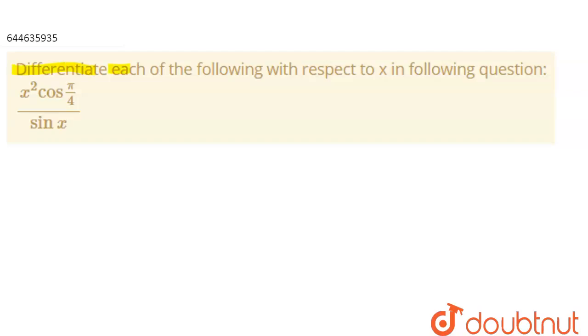Differentiate each of the following with respect to x in the following question. So here we have the given question which is x² cos(π/4) upon sin(x). So let's start our solution.